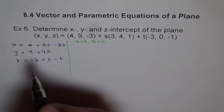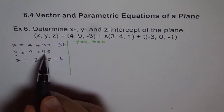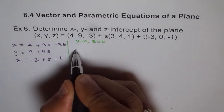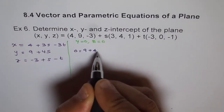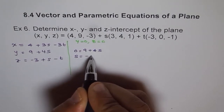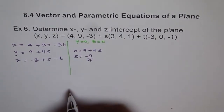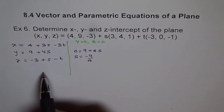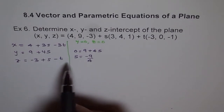If y equals 0, we can find the value of S. Using equation two, we have 0 equals 9 plus 4S, which means S equals minus 9 over 4. Now for z equals 0, we can find the value of T by substituting the value of S.